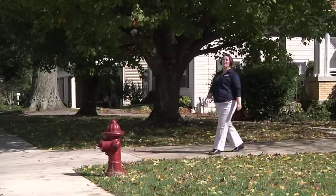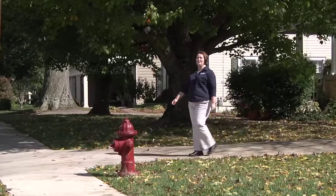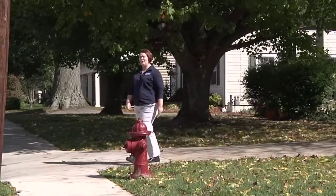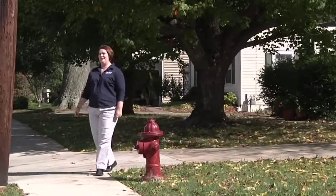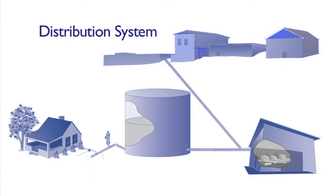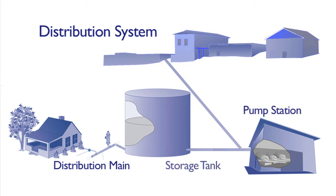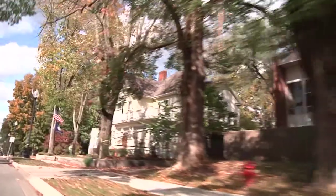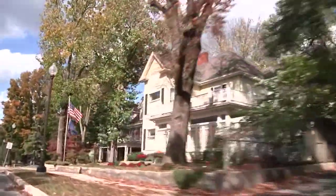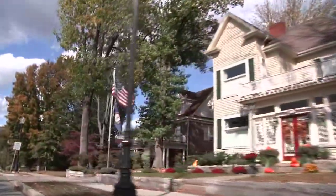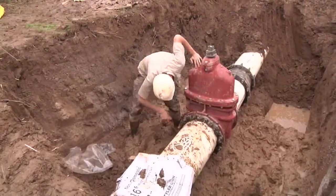Hello, I'm Melissa Melton with the Rural Community Assistance Partnership. In this segment we're going to be talking about distribution systems. There are many parts to a distribution system. Some important ones are the distribution mains, pump stations, and storage tanks. Your community's distribution system can be as expensive and complex as the treatment process itself. There are many considerations and concerns in this part of providing water.